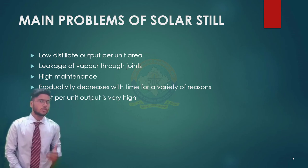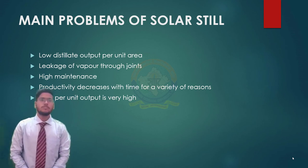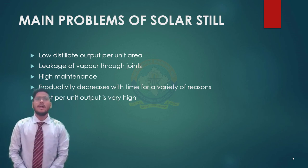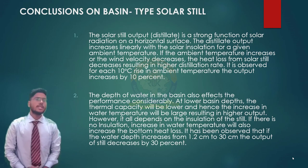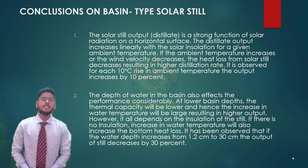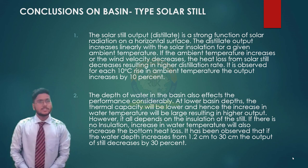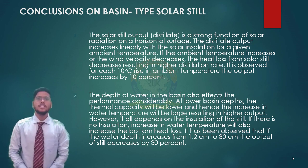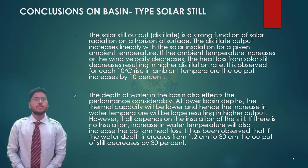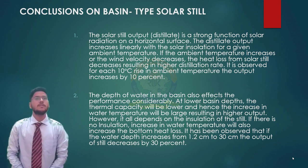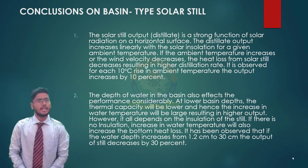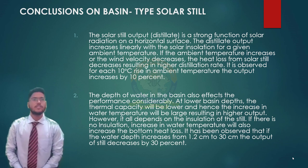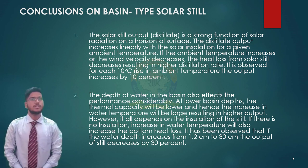After all this discussion, we talk about the main problems of solar stills. Sometimes we face the problems of low distillate output per unit area, leakage of vapor through seals, high maintenance, and high cost per unit output. In conclusion, we can say solar still output is a strong function of solar radiation on a horizontal surface, and the distillate output increases linearly with solar insolation. For a given ambient temperature, depth of water in the basin also affects the performance considerably. At lower basin depths, the thermal capacity will be lower and hence the increase in water temperature will be large, resulting in higher output. However, it all depends on the insulation of the still.